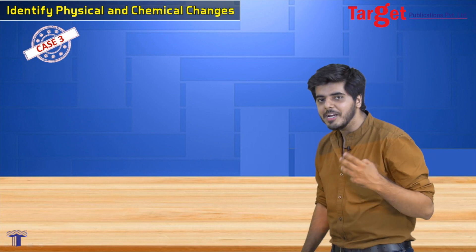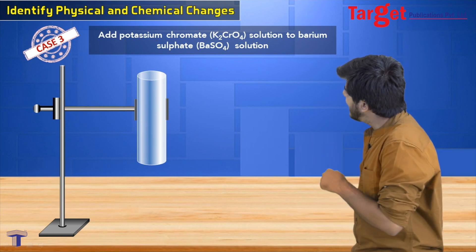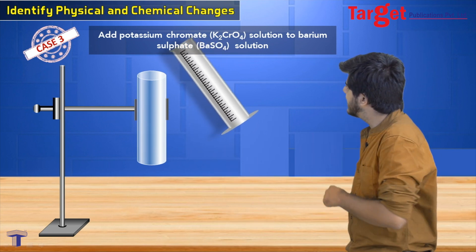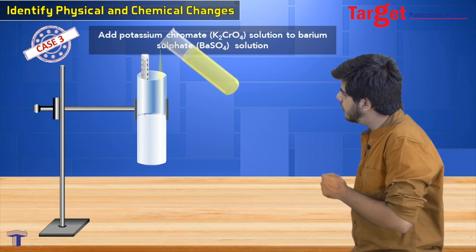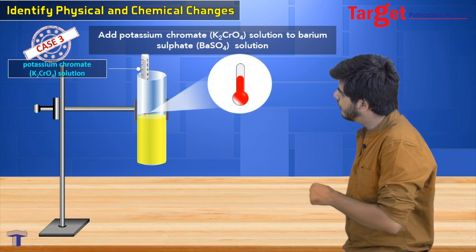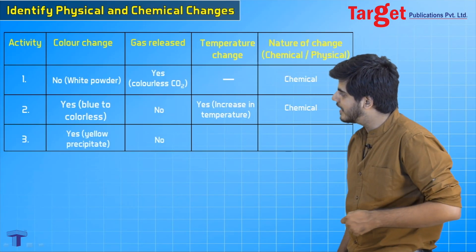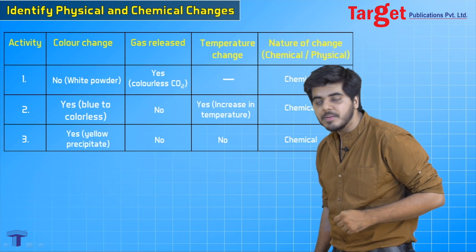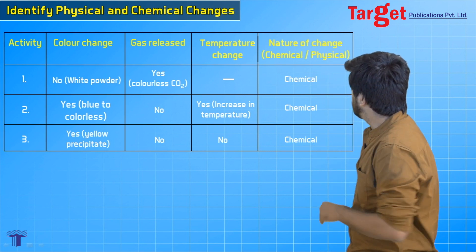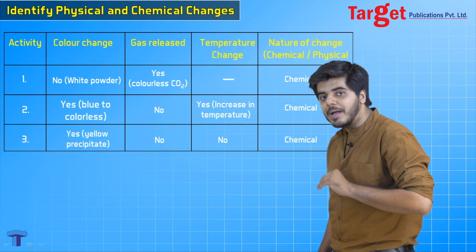Now let us move to the third case: add potassium chromate (K2CrO4) solution to barium sulphate (BaSO4) solution. Take potassium chromate solution in a measuring cylinder, then add barium sulphate to it and observe the temperature. Result: color change — yes, yellow precipitate formed; gas released — no; temperature change — no; nature of the change — chemical change.